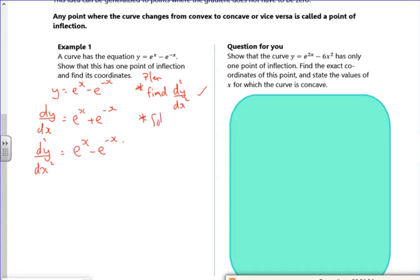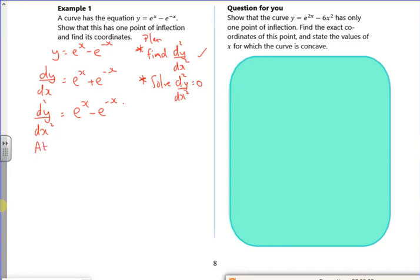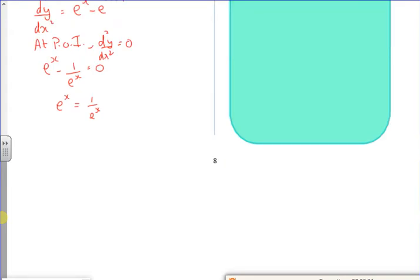I'm now going to solve d²y/dx² = 0. So at my point of inflection, d²y/dx² = 0. So e^x minus, now e^(-x), you can see it's 1 over e^x. That makes it a little bit easier. So that's equal to 0. If I take it over, I've got e^x = 1/e^x. And then if I multiply through by e^x, I've got e^x times by e^x. Now remember, you add the powers if you times, so that's e^(2x) = 1. And then if I take logs, 2x is log of 1. Remember with your log graph, the log of 1 is 0. So 2x = 0, x = 0.